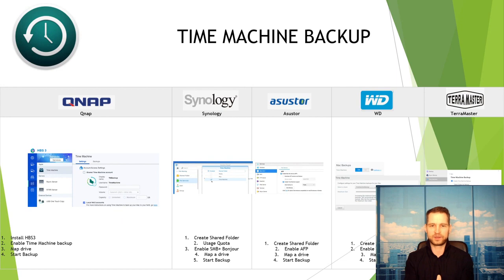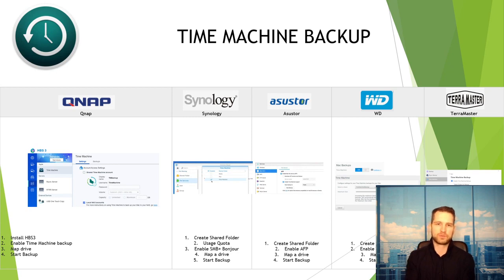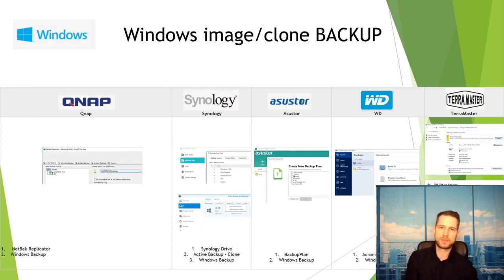Although Time Machine setup is the most difficult to configure, you only do it once — just a few minutes and you'll never need to think about it again. QNAP simplifies this with HBS3. On WD it's fairly simple — just go to settings and enable Mac backups. ASUSTOR and TerraMaster are also pretty basic. The best overall will probably be QNAP, which guides you through the process, or WD.